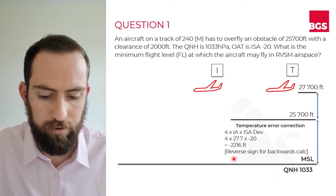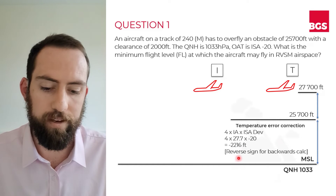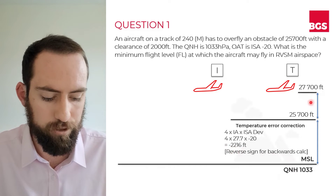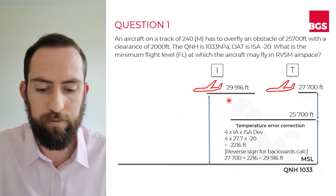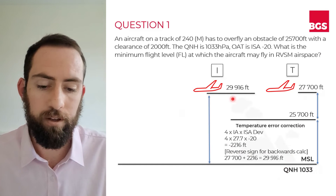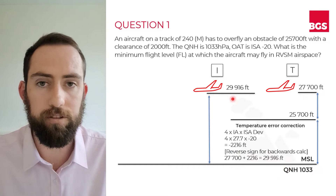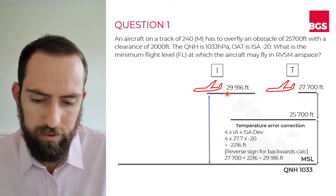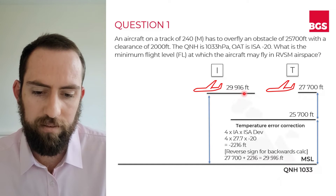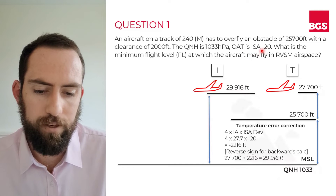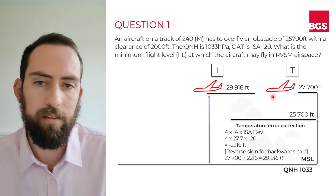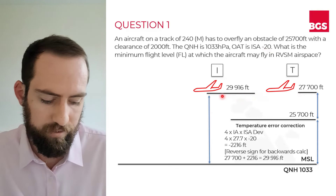As I've said a few times, when we go from true to indicated, we're going to reverse this sign. So we're actually going to add this 2,216 to our true altitude. Doing that calculation, we find that our indicated altitude is 29,916 feet. Does that figure make sense? If our altimeter with the QNH set was telling us this, and conditions were colder than ISA, we'd expect our true altitude to actually be lower — and that does look correct.